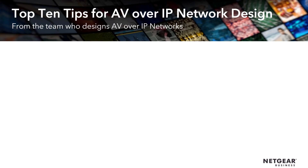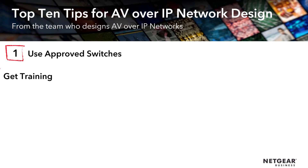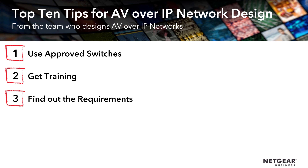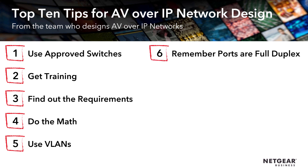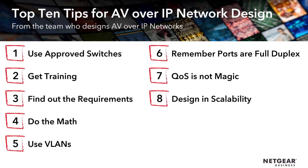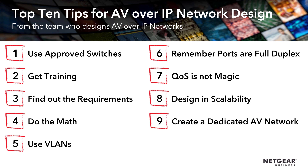So here they are again: number one, use approved switches; two, make sure you get training; number three, find out the requirements of the project; four, do the math; five, use VLANs to help segregate your traffic; six, remember the ports on a switch are full duplex; seven, QoS is not magic; eight, design in scalability; nine, create a dedicated AV network separate from the IT network; and ten, use quality modules in your switches.